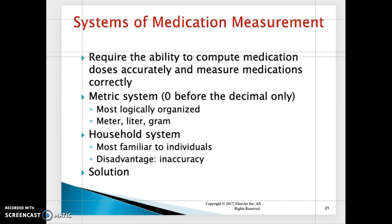The household system is the most familiar to individuals, but the disadvantage of the household system is inaccuracy. Examples include tablespoon, teaspoon, pints, and gallons. Then we have the apothecary system, which has to do with drams and fluid ounces, and so on and so forth.